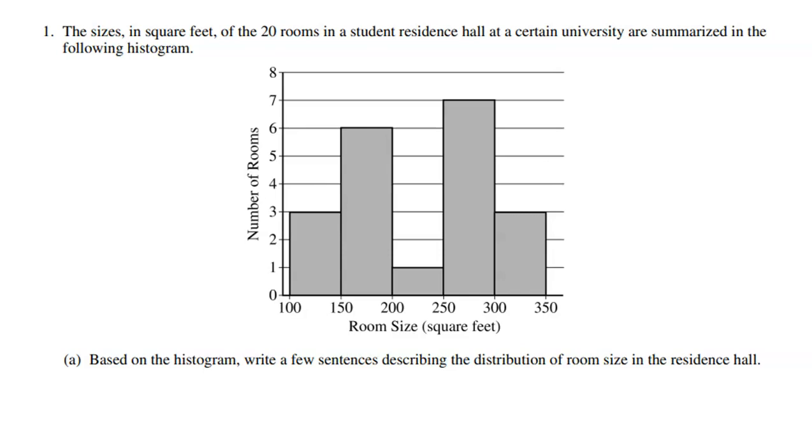All right, here is the first part of the problem. The sizes in square feet of the 20 rooms in a student residence hall at a certain university are summarized in the following histogram. So let's make sure that we understand how to read a histogram. Remember, we call these bins left-handed. So for this first bin right here, this would be for any room that had a square footage of 100 up to 150, but not equal to 150. So it would be from 100 to 149.999. And we see that three of the 20 rooms fell into that range or that bin.